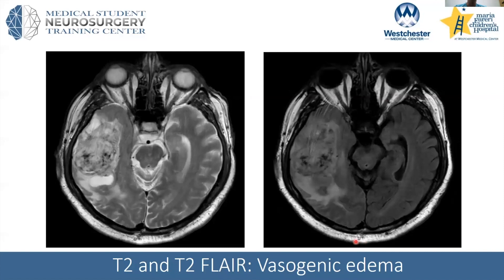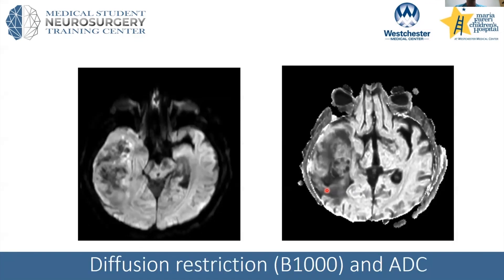T2 and T2 FLAIR are also good at picking up water. Here we see vasogenic edema — swelling and water in the brain caused by a sizable tumor. The tumor's abnormal blood vessels leak fluid, which you can pick up on MRI and, more faintly, on CT. Another commonly used sequence is diffusion restriction, usually labeled as b1000. It's very good for looking at strokes and dense lesions — high-grade tumors like medulloblastoma, where cells are tightly packed, appear bright on diffusion restriction.